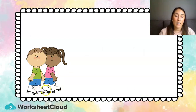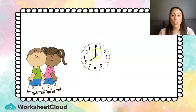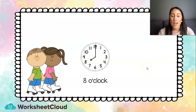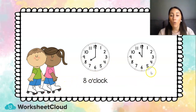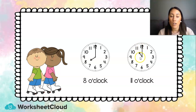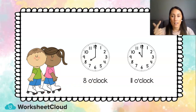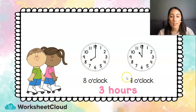Emma and Joshua look like they are rollerblading. They start rollerblading at 8 o'clock — the long hand is on the 12 and the short hand is on the 8. They go back home after rollerblading all morning at 11 o'clock — the long hand is on the 12 and the short hand is on the 11. How much time has passed from when they started to when they ended rollerblading? From 8, we count 9, 10, 11 — so 3 hours have passed, or they rollerbladed for 3 hours.